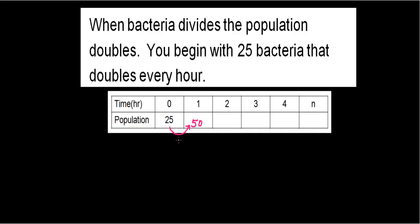Notice that is equivalent to having 25 times 2. At the end of two hours, I will have 100 bacteria — that means I multiplied 50 times 2. At the third hour, I'll have 200 bacteria, which is multiplying 100 times 2. At the fourth hour, I will have 400 bacteria, which is 200 times 2.